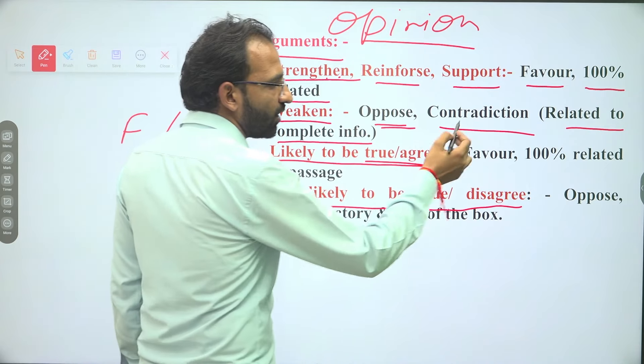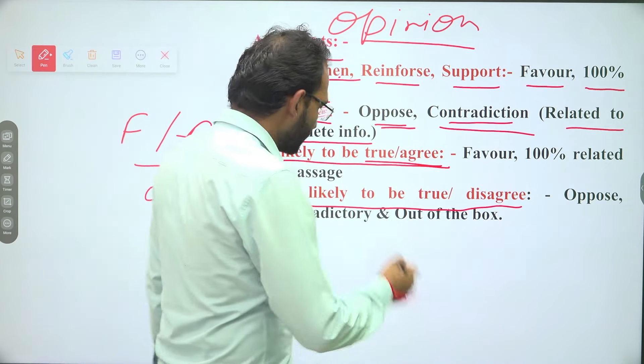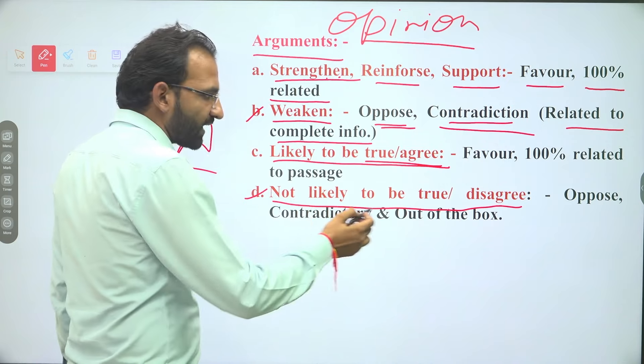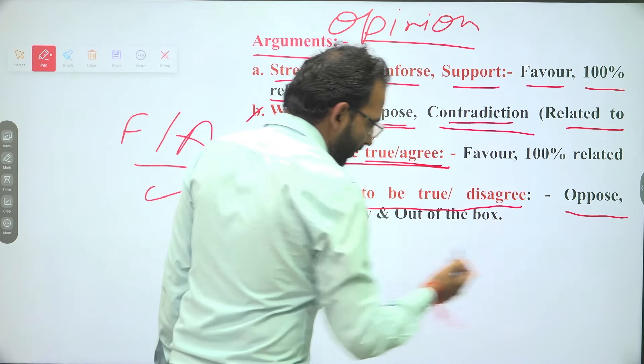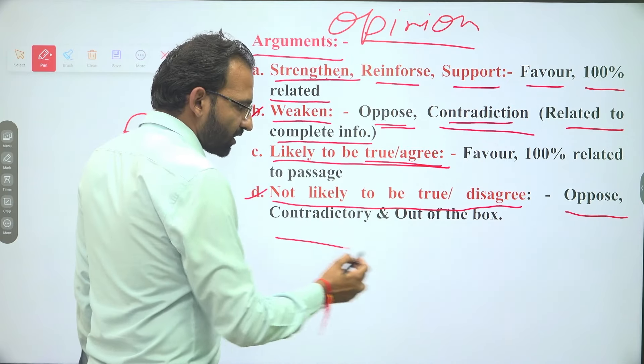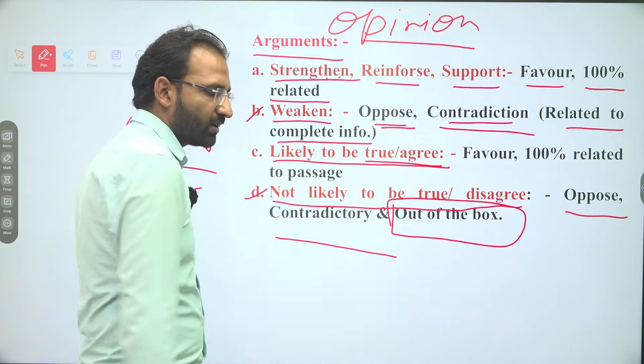Weakened means either oppose or contradiction. But not likely to be true — it will be opposed, contradiction, and one point added: out of the box. If there is a point out of the box, then it will not likely be true.